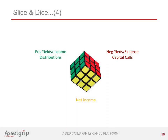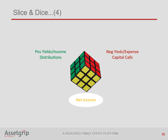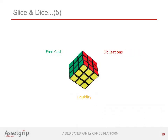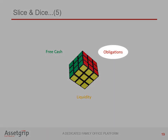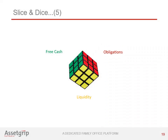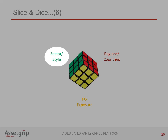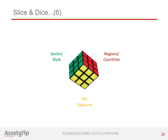AssetGrip offers the possibility to capture and closely monitor all these components, leading to an estimated net income figure. By adding up all cash and cash-equivalent positions and subtracting all possible future obligations, an estimated free cash position remains. It is important to know how quickly assets can be liquidated to meet short-term obligations — management of liquidity risk underlies these axes. All characteristics of all instruments, both listed and non-listed, can be defined and recorded according to one's own insight, making AssetGrip extremely flexible as a dedicated family office platform.